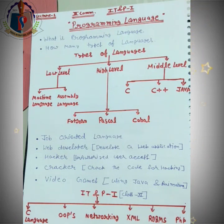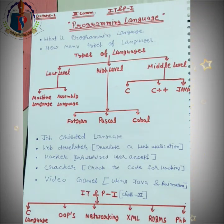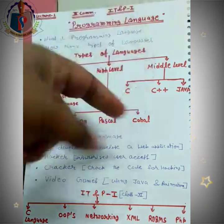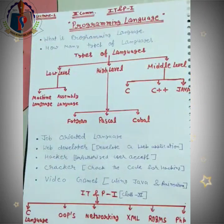Phir hum aate hain middle level language pe — jo main aapko padhaaunga. Kyunki jab bhi aapko programming start karni hai, toh programming yahan se seekhni padti hai. Programming ka jo pehla step hota hai, vo hota hai C language, phir C++, third step hota hai C# aur Java. Middle level language mein C, C++, aur Java hain.